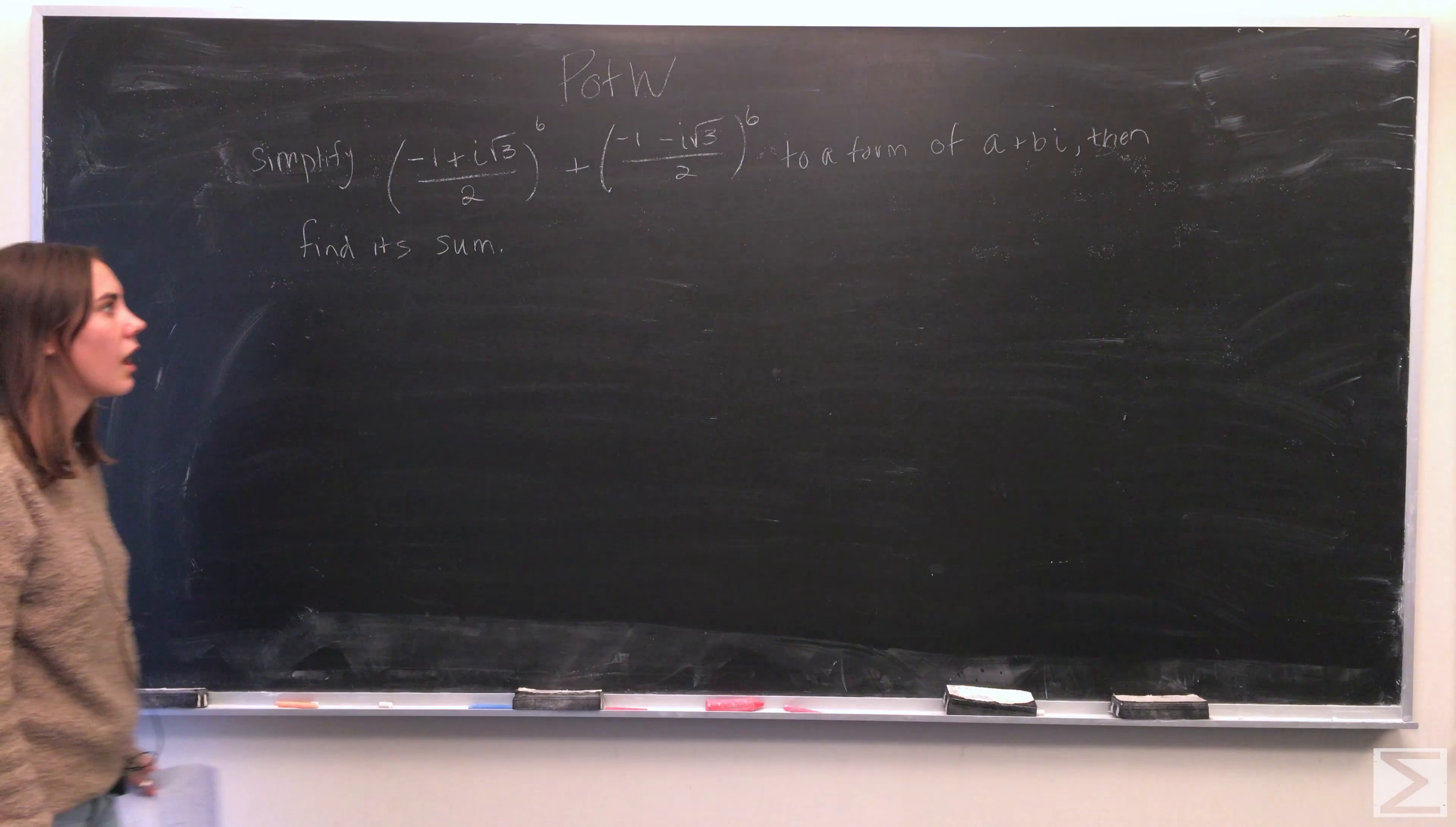This week, the problem is simplify negative 1 plus i square root 3 over 2 to the 6 plus negative 1 minus i square root 3 over 2 to the 6. To form of a plus bi and then find its sum.